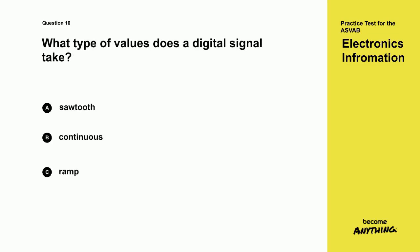Question 10. What type of values does a digital signal take? A. Sawtooth. B. Continuous. C. Ramp. D. Discrete.